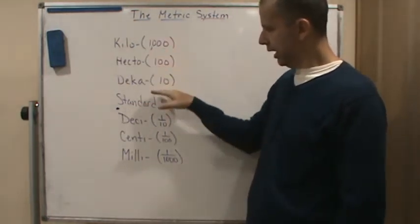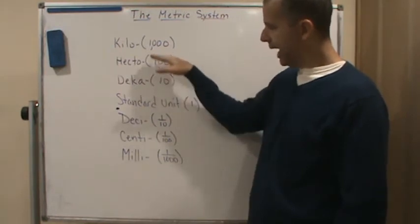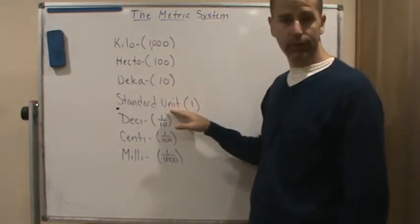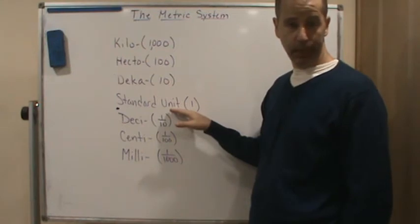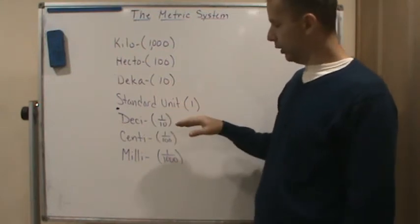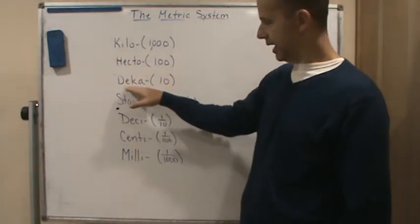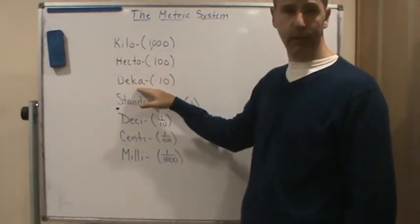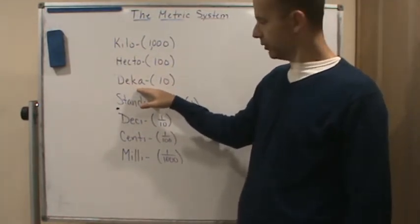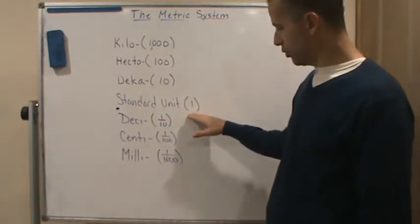Okay, so if we're one power of 10, that's going to be a deca. So if the unit was gram and I wanted 10 grams, that would be one decagram.